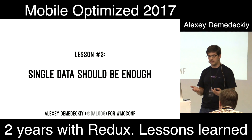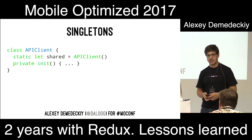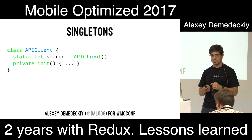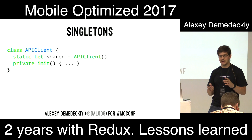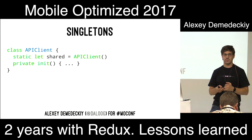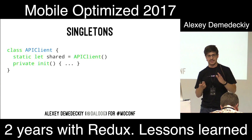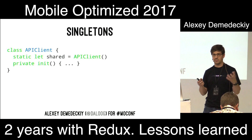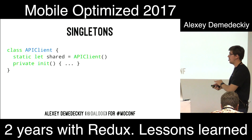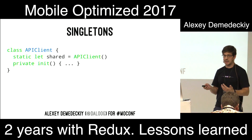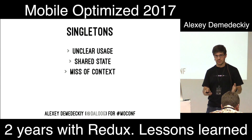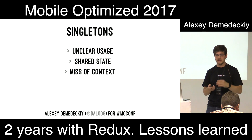You have a single place where all mutations to your single model are applied — there is the only way to change the model. My third lesson is that the single data you receive should be enough. Otherwise you'll end up looking for differences, which is vulnerable to thread issues and lifecycle issues. In the case of data, you just receive the new data to the new view controller and everything is in the same place.